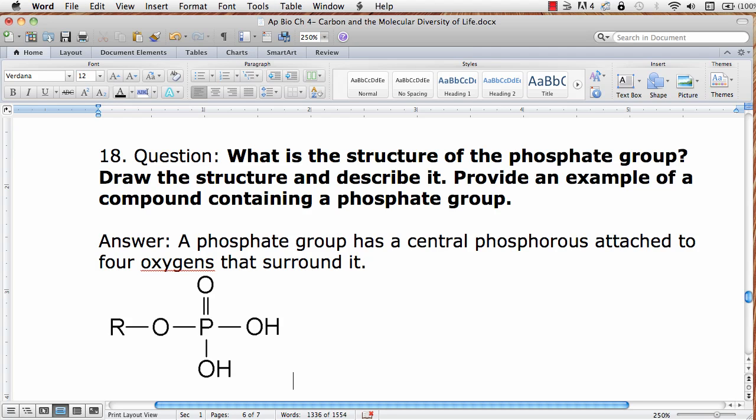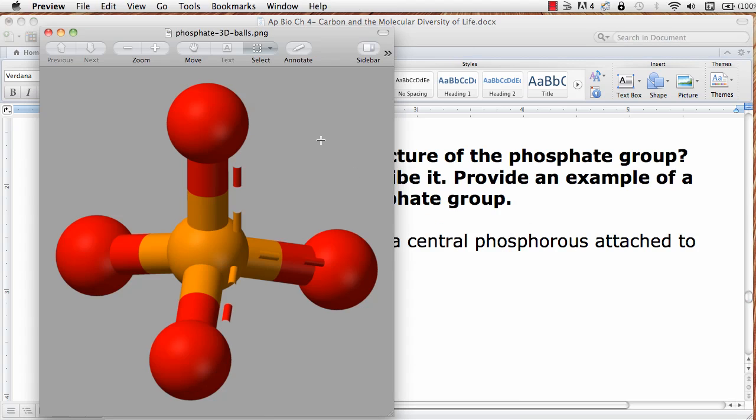The 3D ball and stick figure or picture image of a phosphate group looks like this: a central phosphorus and four oxygen atoms that it is attached to.